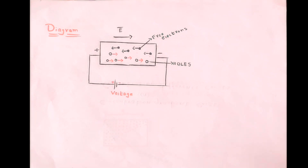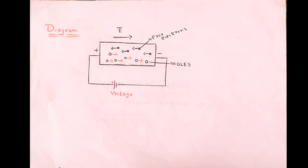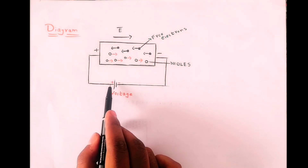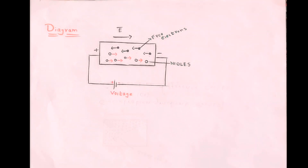In a semiconductor device, the electrons always try to move in a straight line towards the positive terminal of the battery. But due to collision with atoms, they change the direction of flow. Each time the electron strikes an atom, it bounces back in a random direction. The applied voltage does not stop this collision, but it causes electrons to drift towards the positive terminal of the battery. Due to this drifting of electrons, current will start flowing in the semiconductor device.